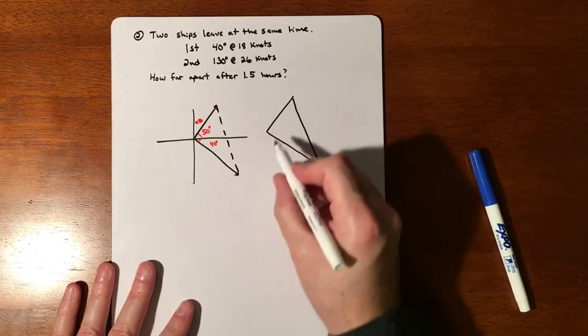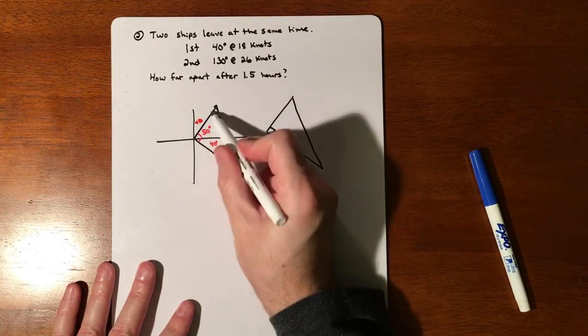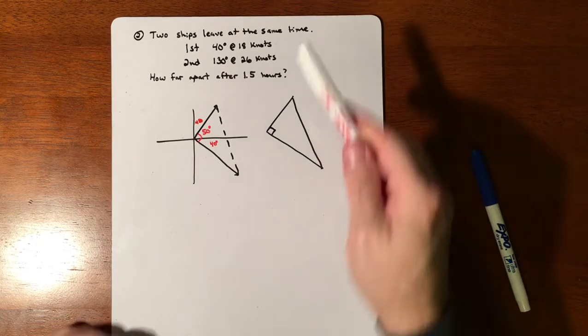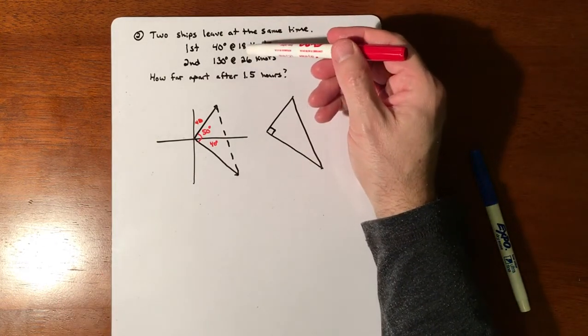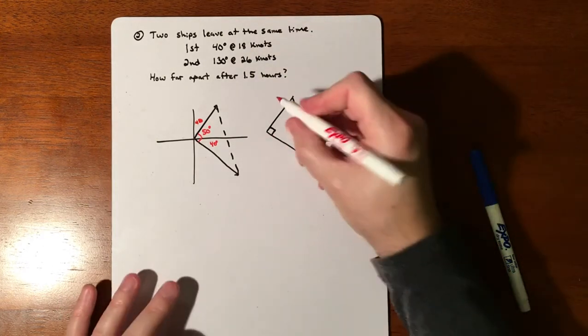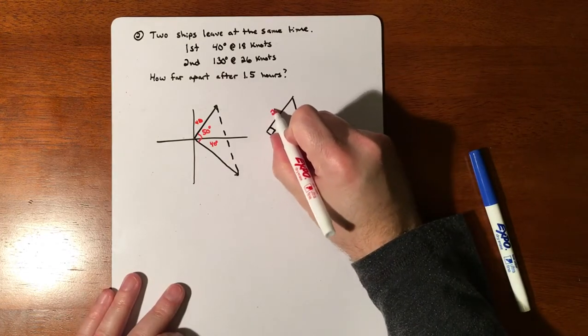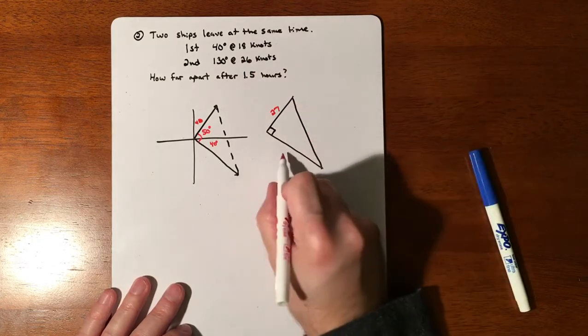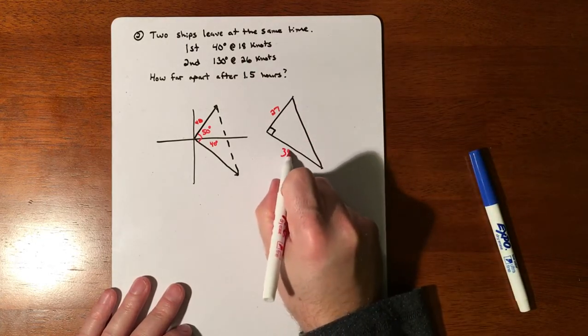How far is that? We went 1.5 hours at 18 knots, so if you multiply 18 times 1.5 that puts that at 27, and then 26 times 1.5 puts us at 39.